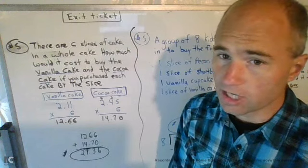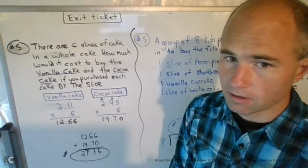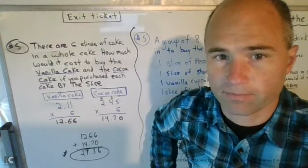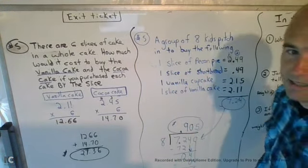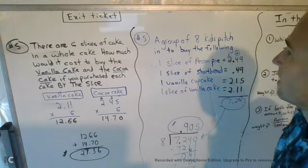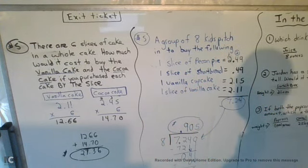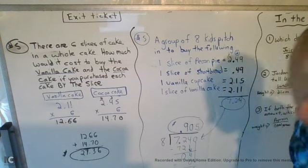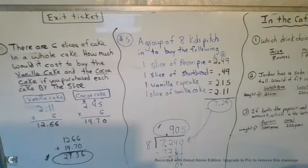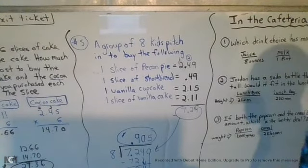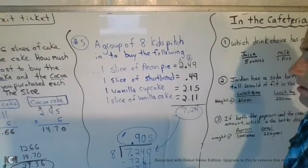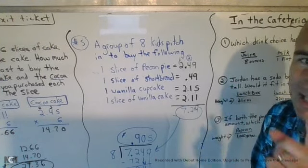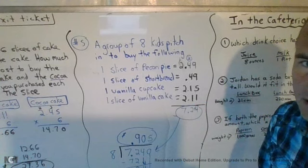A little bit more challenging than what we're used to, but I wanted to make sure I prepare you the best I can for sixth grade here. The next exit ticket question says, a group of eight kids pitch in to buy the following: one slice of pecan pie, I'm not a big fan of pecan pie; one slice of shortbread, I do like shortbread; one vanilla cupcake, anything vanilla is great; and then one slice of vanilla cake.